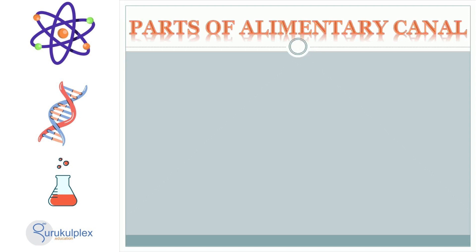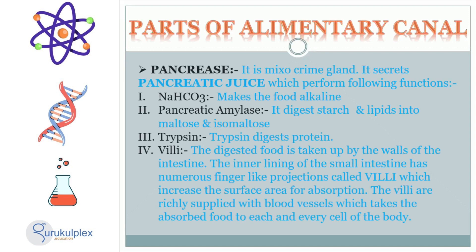The pancreas is an organ which is both an endocrine and exocrine gland. It secretes pancreatic juice, a fluid with multiple roles. This liquid contains sodium bicarbonate, which renders food alkaline; pancreatic amylase, which breaks down starch and lipids into maltose and isomaltose; and trypsin, which aids in digestion of proteins.